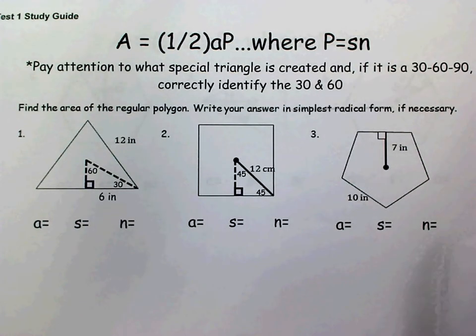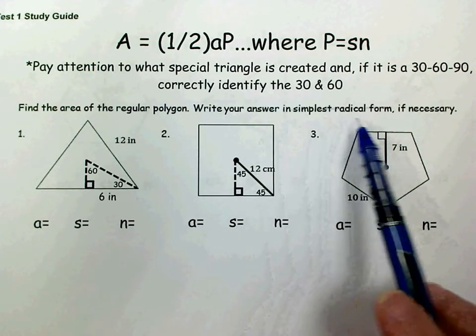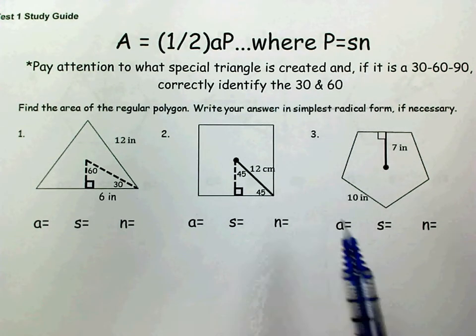On numbers 1 through 6, you're finding the area of the regular polygon. If you have a radical in your answer, you're just leaving your answer in simplest radical form.